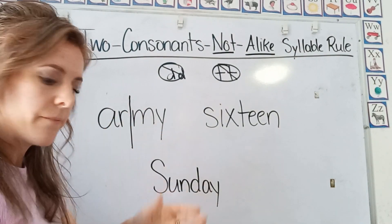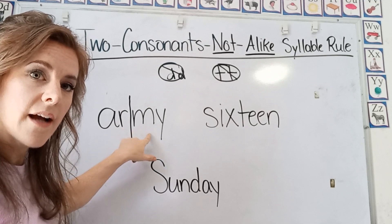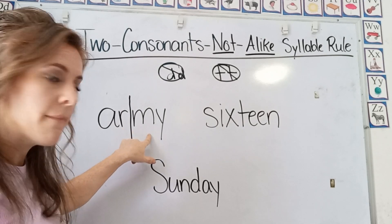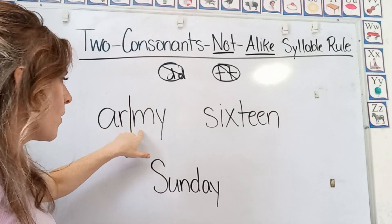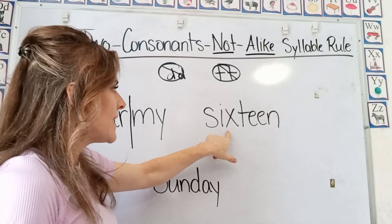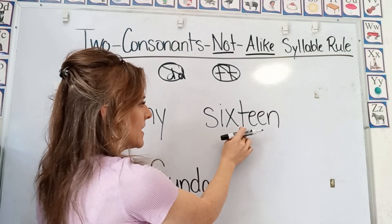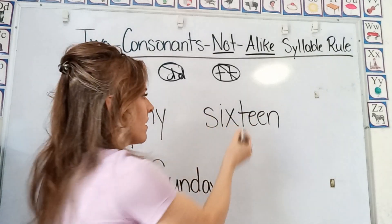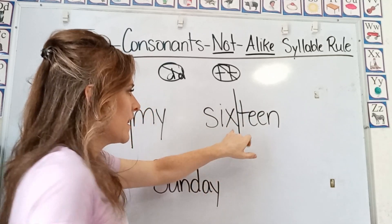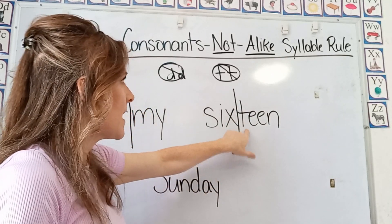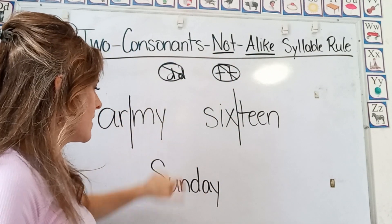Army — we have the consonant R and the consonant M, and we divide between them when they're not alike. With '16', we have the X and the T. We divide between the X and the T — not alike consonants.